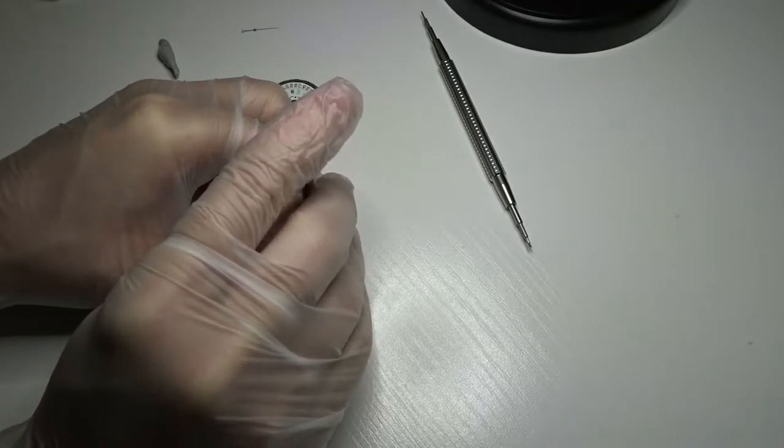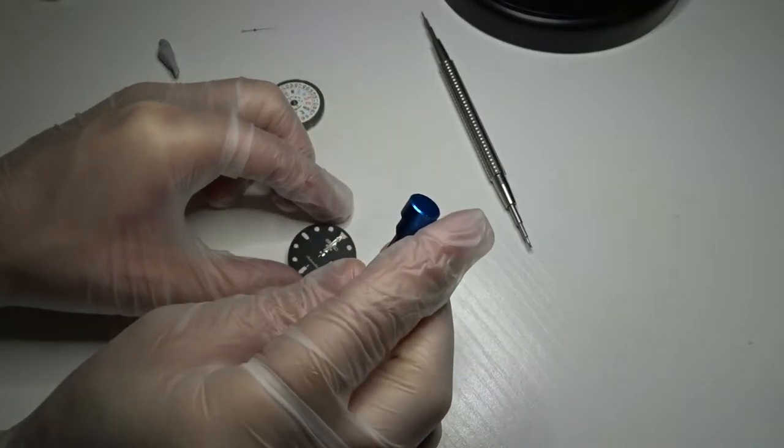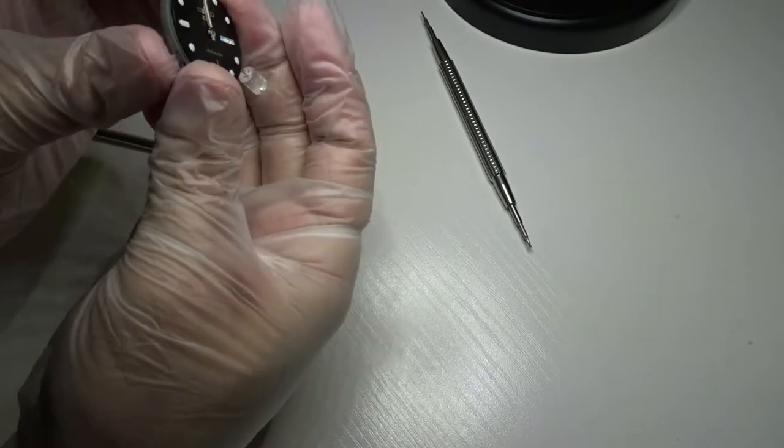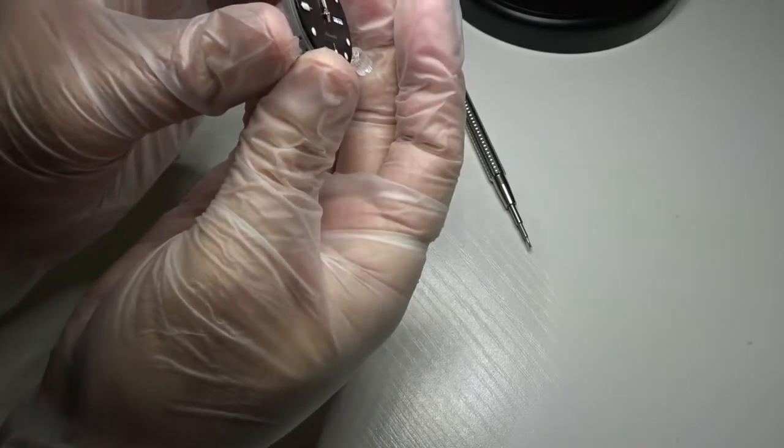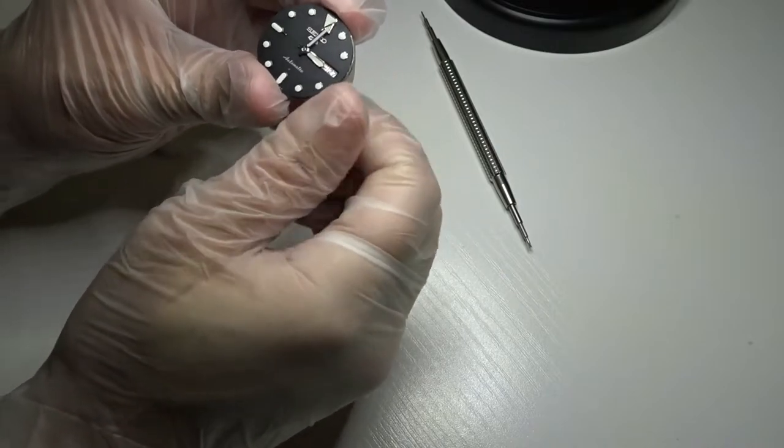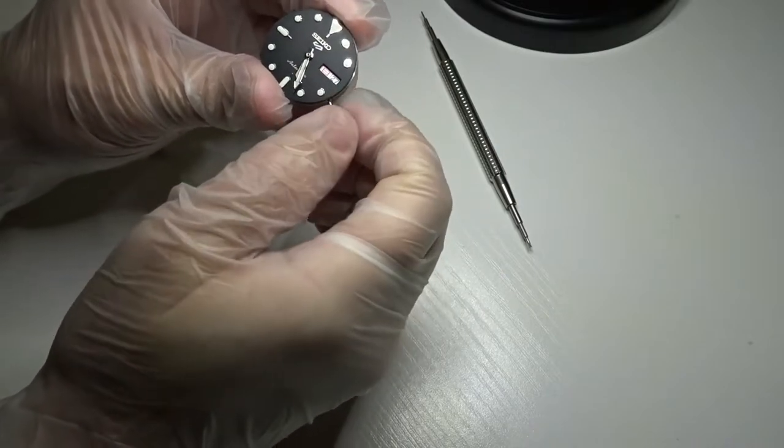It's kind of tricky in a way in that if you don't press down hard enough, it's not going to seat properly. But if you do it too hard you could damage the hands and bend them, and once they're bent it's kind of hard to get them back into shape.